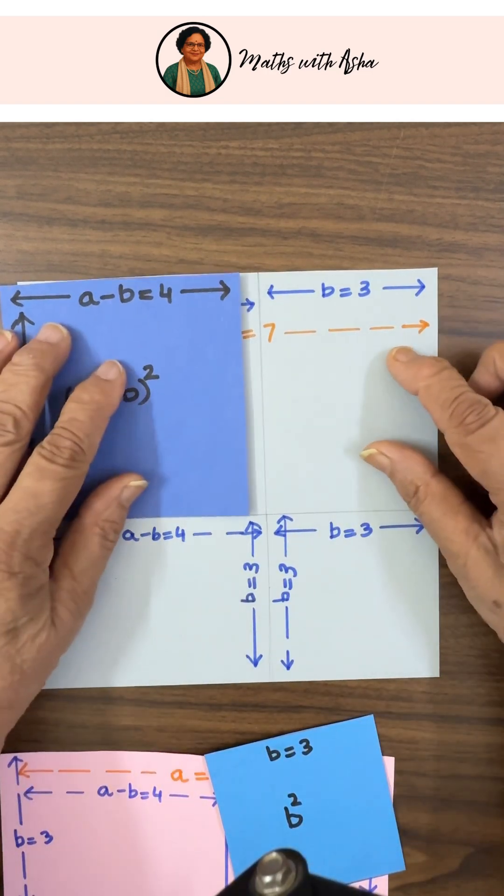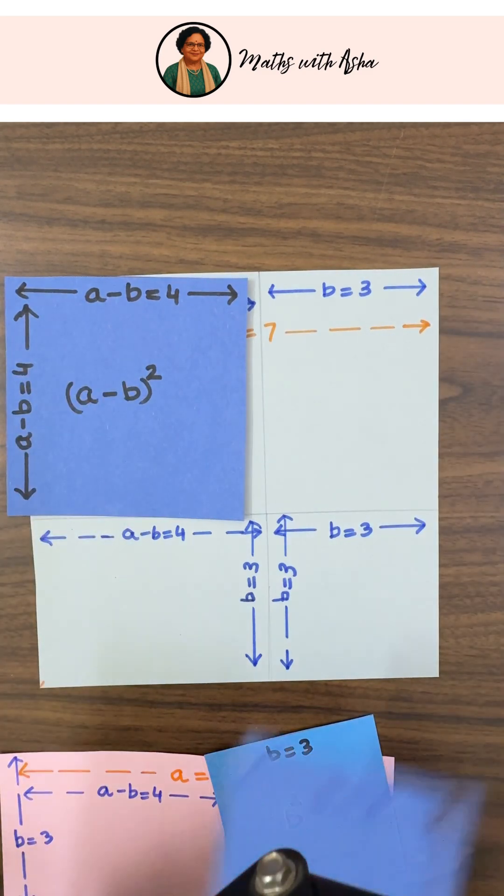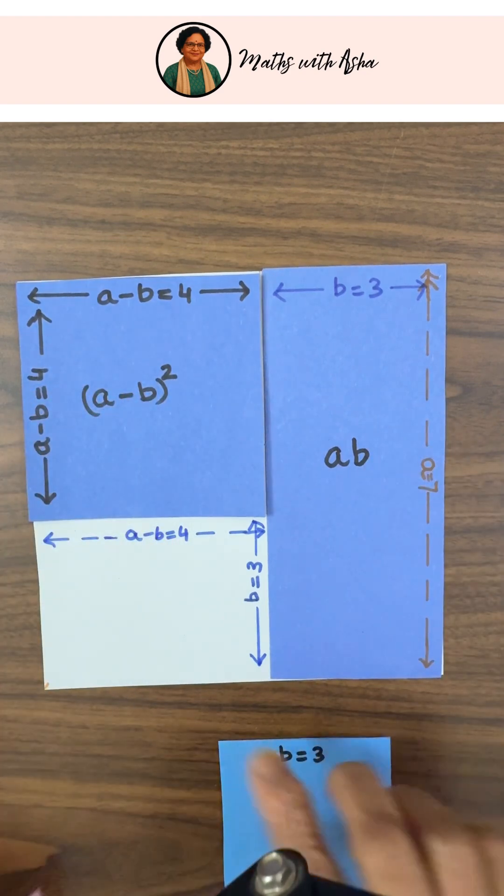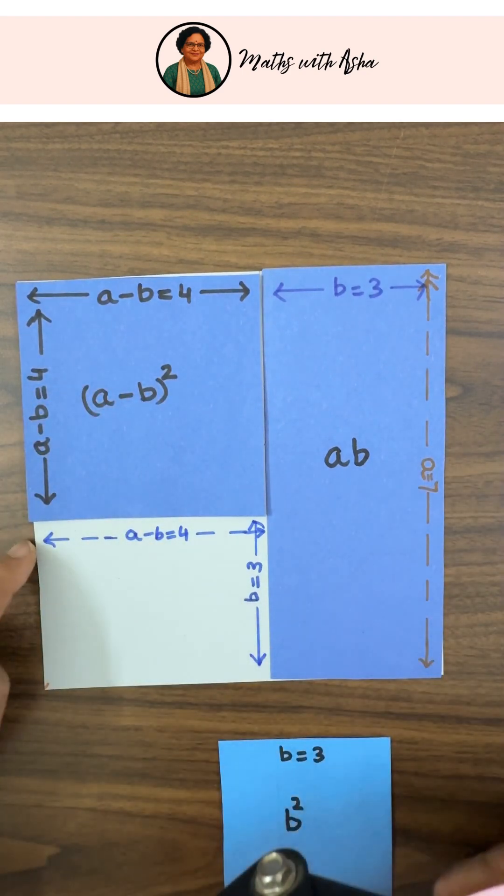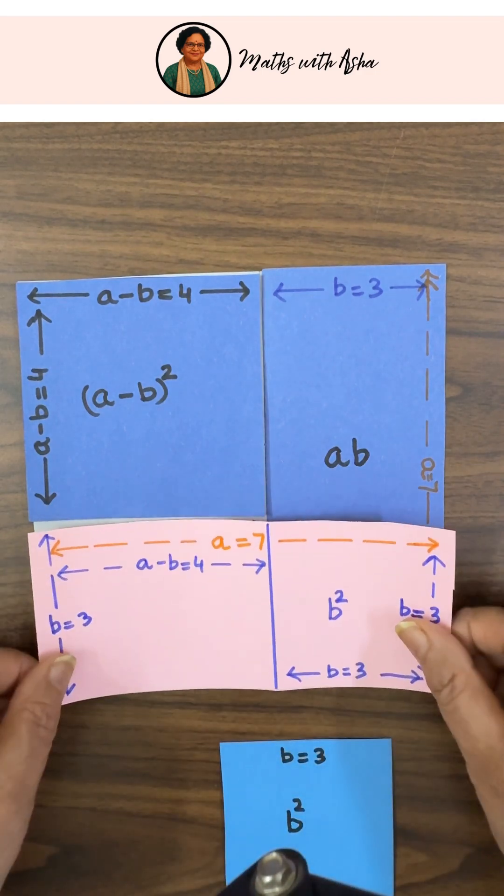Now what is this portion? This one. This is B and this whole side is A, so it is AB, so we can subtract AB. And this side is another - this is A and this side is B - so this is another AB.